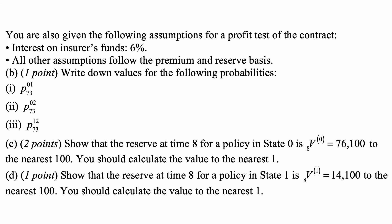Part D: Show that the reserve at time 8 for a policy in State 1 is 8V1 which is 14,100 to the nearest 100. You should calculate the value to the nearest 1.